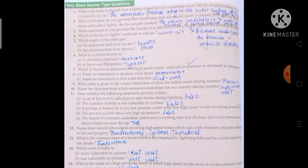Question number second: what conclusion do you get from the observation that when cold water is poured over tin can full of steam and corked tightly, the tin gets crushed? The answer is the steam condenses into water and creates a partial vacuum inside the can. Then third one: what conclusion do you get from the fact that it is difficult to ride a bicycle against the direction of the wind?